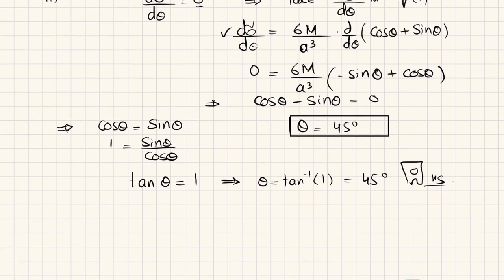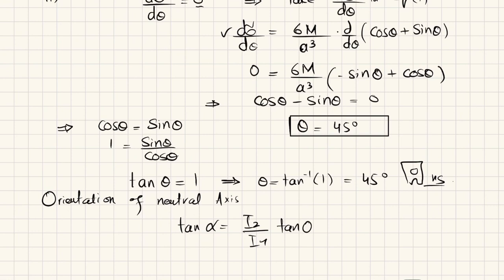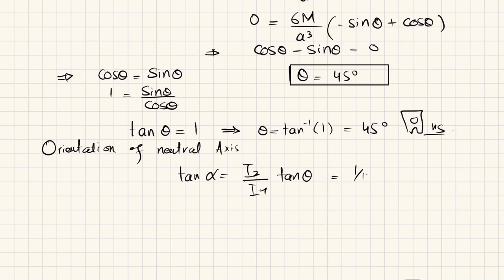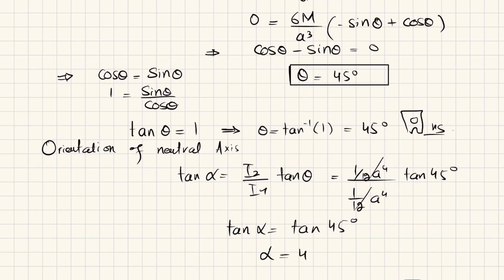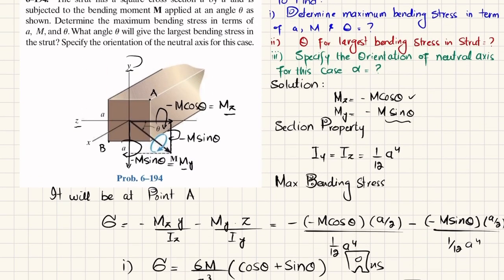For the last part, we determine the orientation of the neutral axis. Using the formula tanα = (Iz / Iy) · tanθ: since Iz = Iy = (1/12)a⁴ and θ = 45°, we get tanα = tanθ = tan45°, so α = 45°. The neutral axis is oriented at 45°.